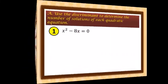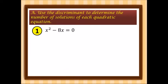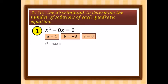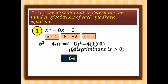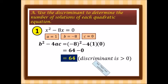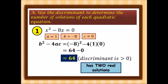Let's have the first example: x squared minus 8x is equal to 0. Our a here is 1, b is negative 8, and c is equal to 0. Substituting into the discriminant: negative 8 squared minus 4 times 1 times 0, we have 64 minus 0 which is equal to 64. The discriminant is greater than 0, therefore it has two real solutions.